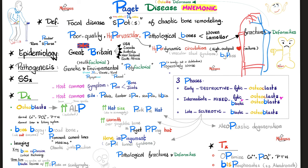A bone biopsy shows broad bones with prominent cement lines giving a characteristic mosaic pattern, reflecting the highly active, chaotic osteoblastic activity. However, biopsy is not primarily used to diagnose Paget's — it is used to rule out osteosarcoma. Diagnosis is made from history, physical exam, isolated elevated alkaline phosphatase, and bone scan.